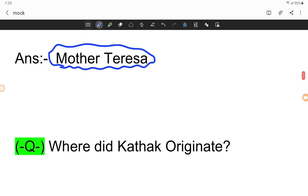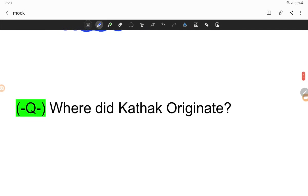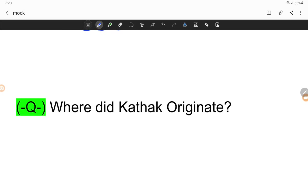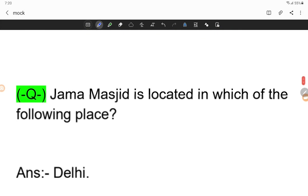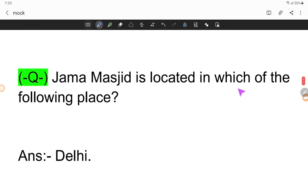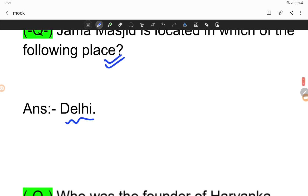Where did Kathak originate? Kathak is a classical dance that originated in Northern India. Jama Masjid is located in which of the following places? Delhi.